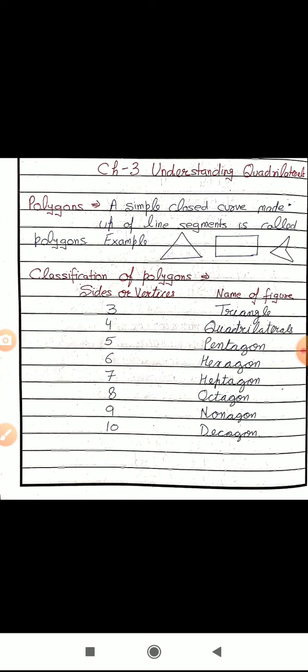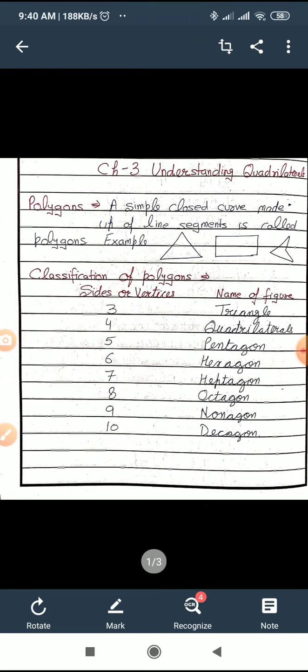What is a quadrilateral? A quadrilateral is a closed figure made up of four line segments. You have already studied triangles, pentagons, and many other figures made up of line segments. Commonly, these figures are called polygons. A simple closed curve made up of line segments is called a polygon. Examples include a triangle, a rectangle, and a quadrilateral — all commonly called polygons.